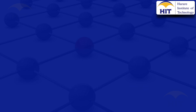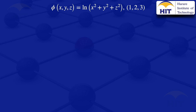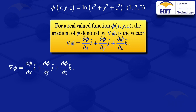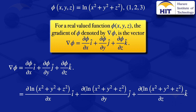I now move on to the second question where phi of xyz equals ln of x squared plus y squared plus z squared, and we evaluate the gradient at the point (1, 2, 3). If we have a real valued function phi of x, y, z, the gradient of phi is: partial derivative of phi with respect to x times i, plus partial derivative with respect to y times j, plus partial derivative with respect to z times k. We substitute ln of x squared plus y squared plus z squared into this three-dimensional gradient formula.